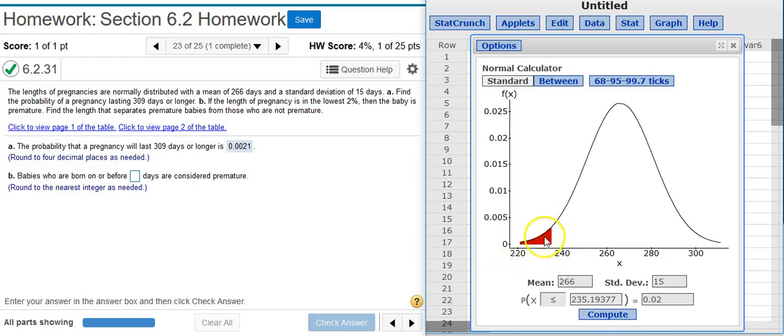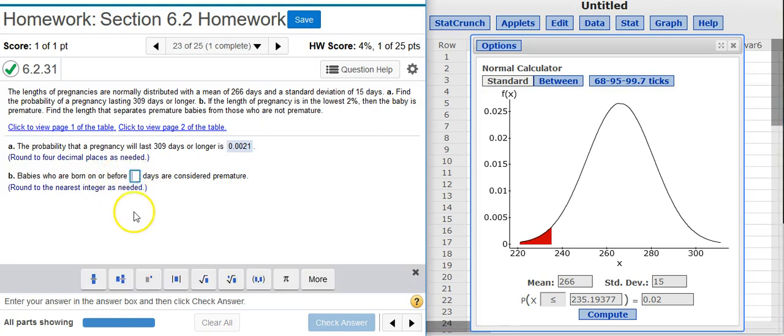Now we're at the left tail of the distribution. This is the lowest 2%. And this boundary here for the tail is the value we're looking for. Rounding that to the nearest integer gives me 235.